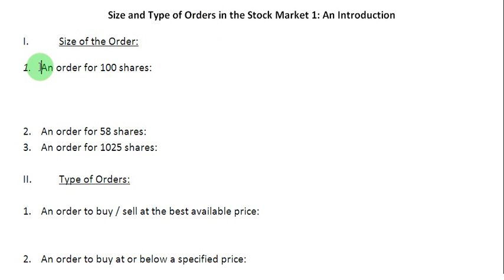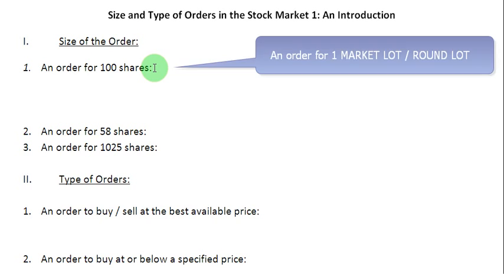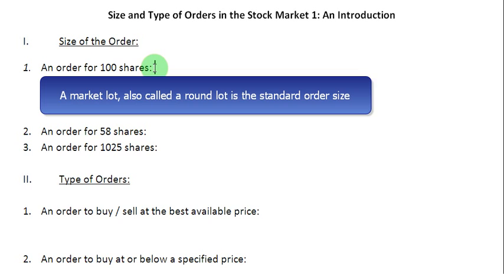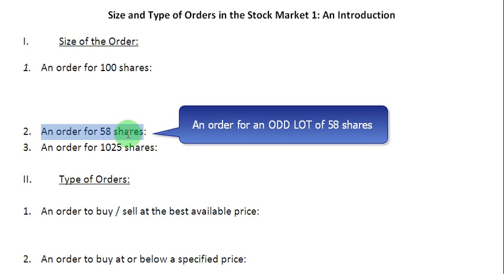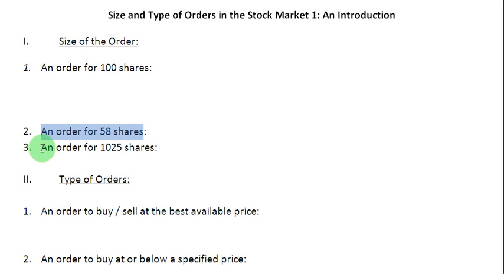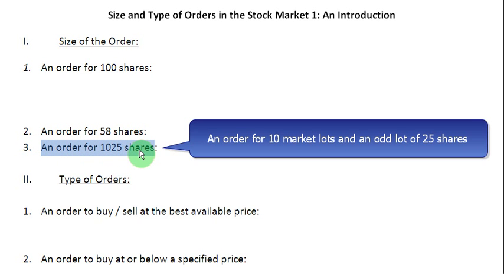When I look at this order here, which is an order for 100 shares, it readily tells me that this is an order for one market lot or one round lot. A market lot or a round lot is simply the standard size of the order. Therefore, any order which is not conforming to the standard size, like an order for 58 shares, is going to be called an order for an odd lot. So an order for 1025 shares is going to be an order for 10 market lots and an odd lot of 25 shares.